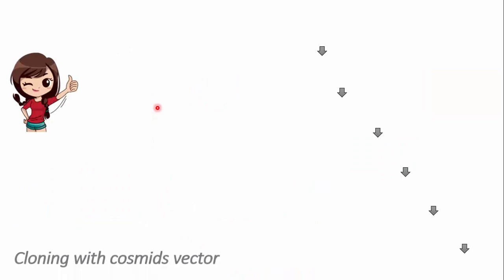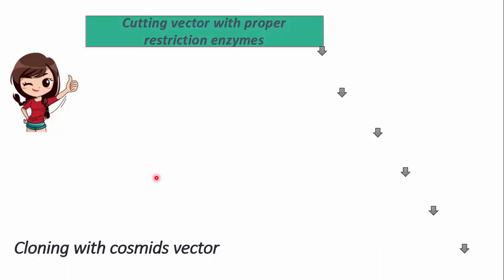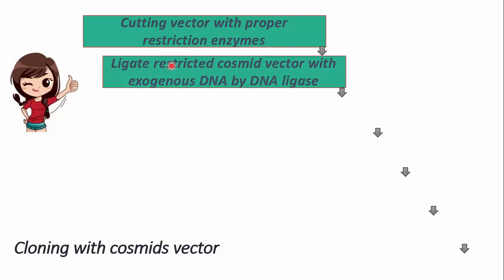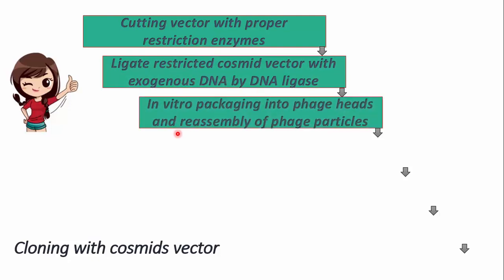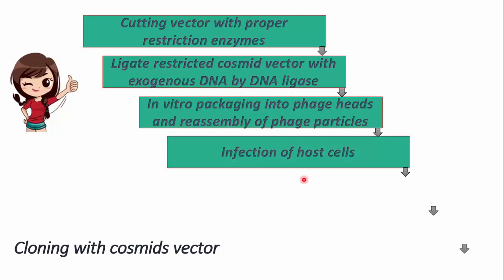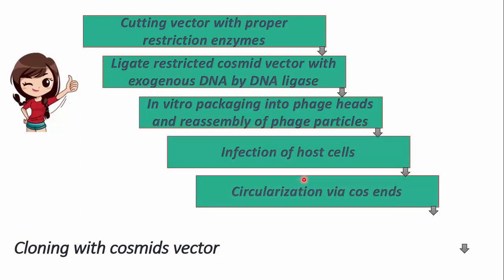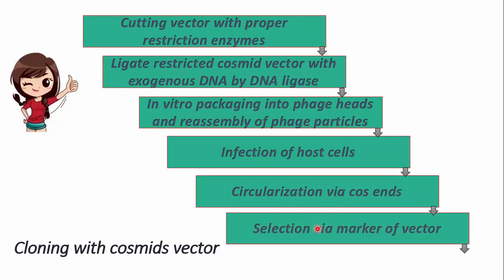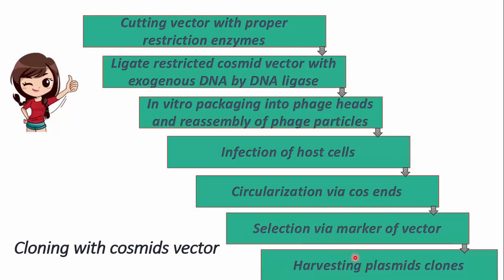Here is a summary of cloning with the cosmid vector. First, cut the vector with a proper restriction enzyme. Then ligate the restricted vector with exogenous DNA using DNA ligase. Next, in vitro packaging into the phage head and assembly of phage particles, followed by infection of host cells and circularization via cos sites. Finally, selection through the antibiotic resistance gene, and then harvest the plasmid containing our recombinant cosmid vector.